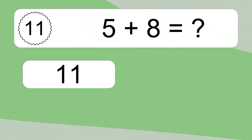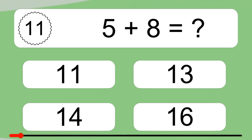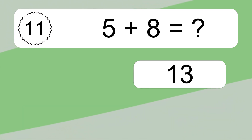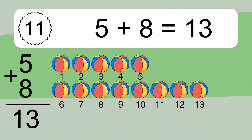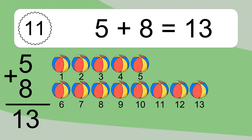5 plus 8 equals what? 5 plus 8 equals 13. Let's count it: 1, 2, 3, 4, 5, 6, 7, 8, 9, 10, 11, 12, 13.